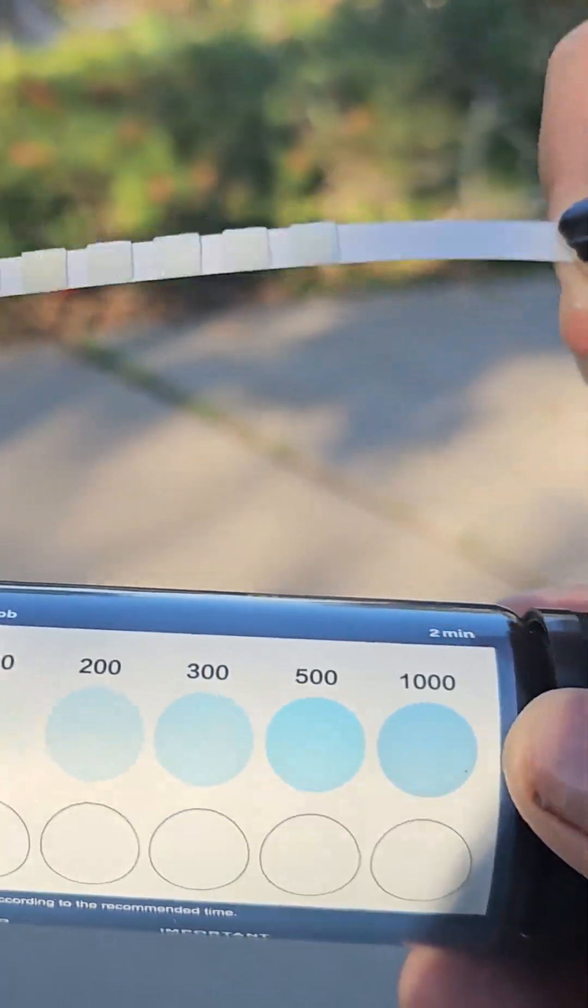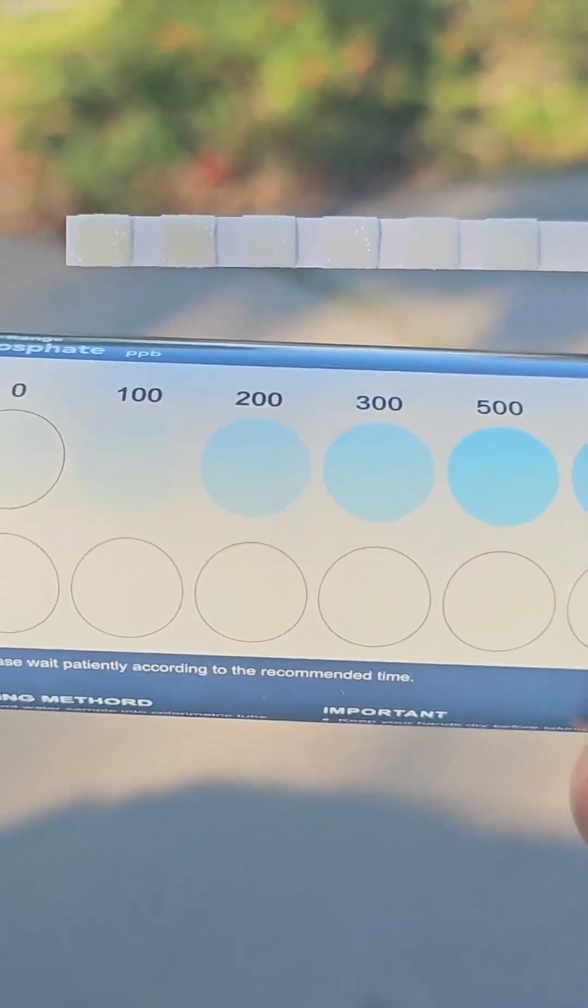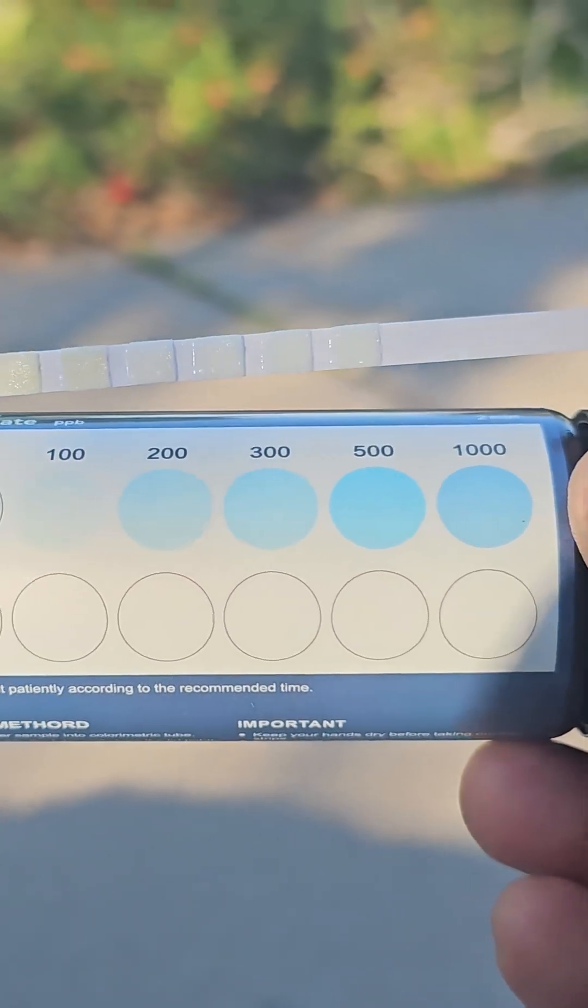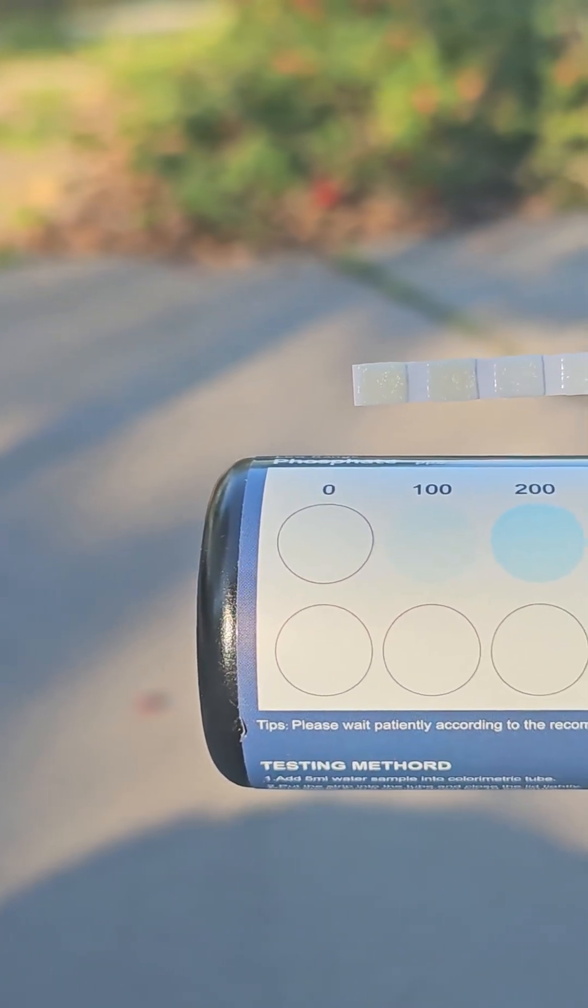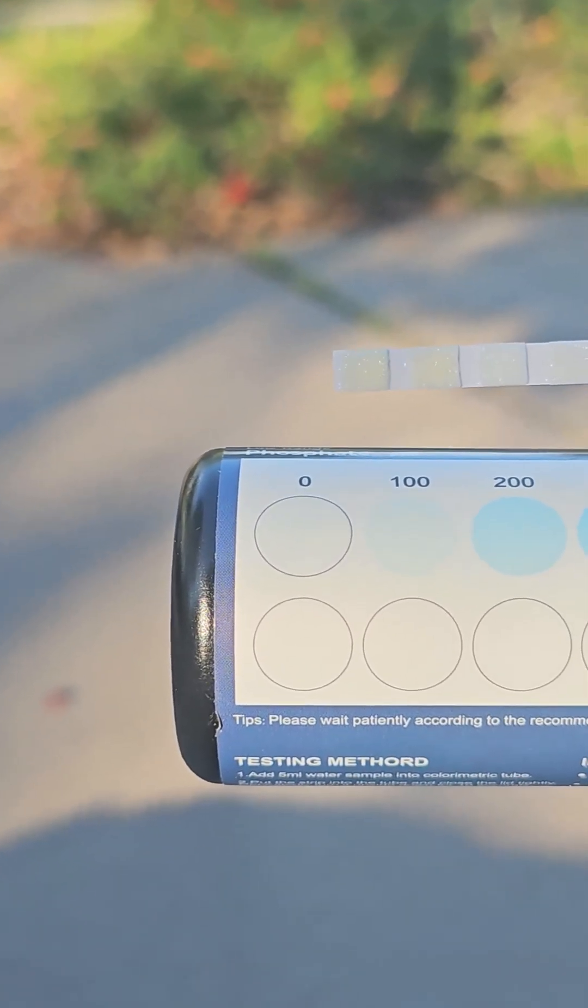Now we're going to compare the actual strips to see the actual chemical reaction. Right now we're looking at a little bit more yellowish than the hundred, if you guys can see. You can tell the change in color.